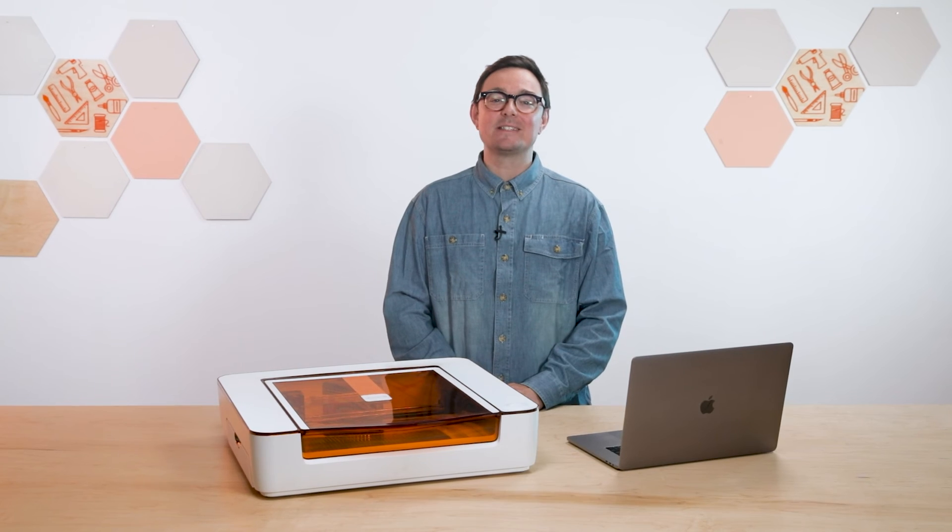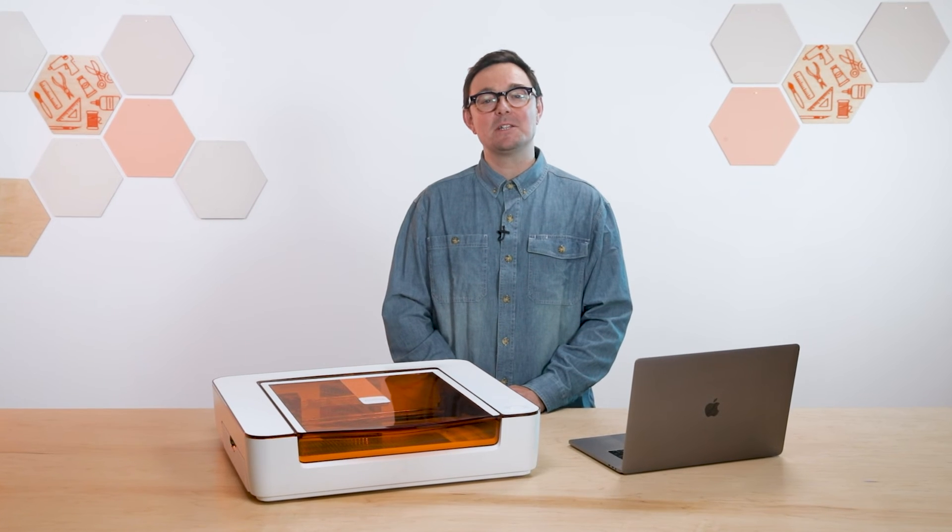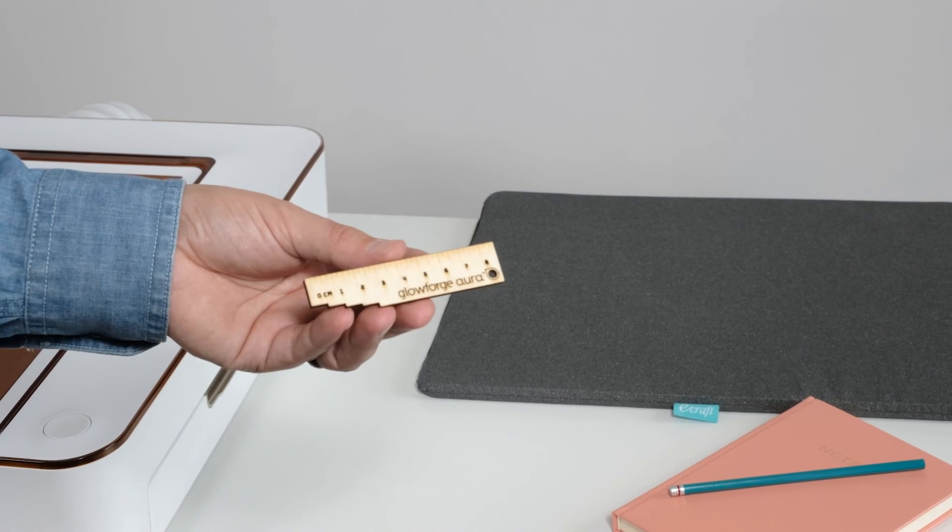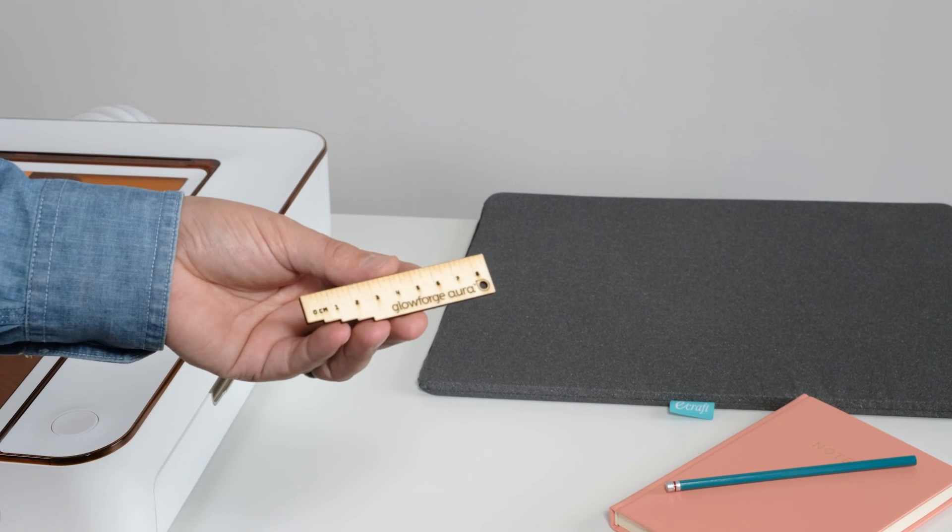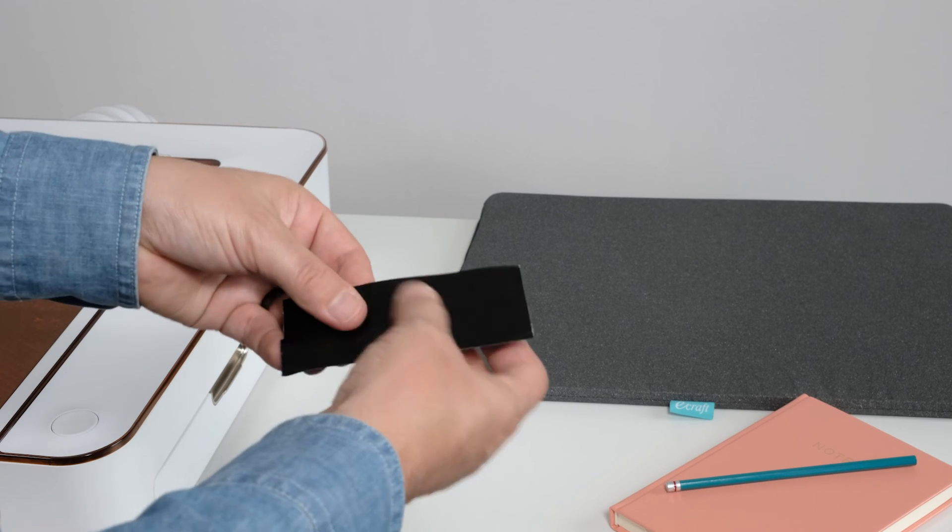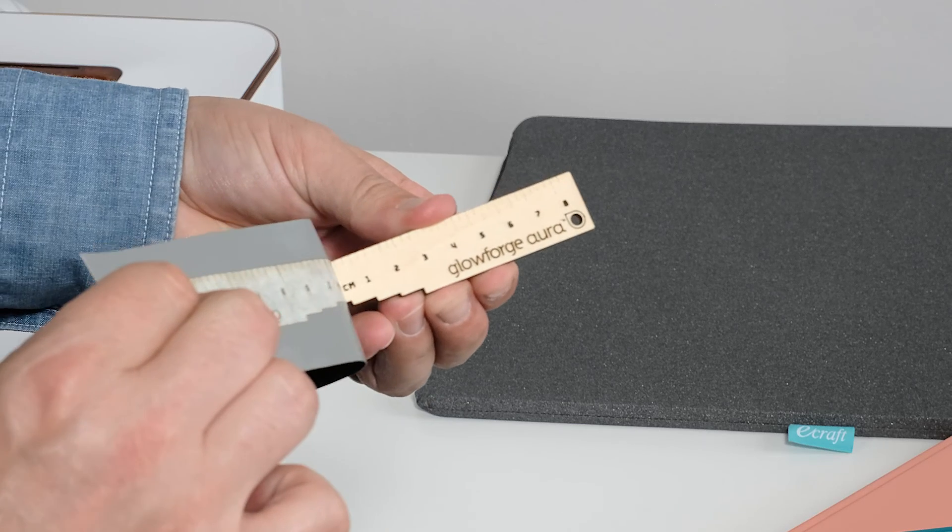Once the printing finishes wait a few moments for any leftover smoke to clear and when it's done the app will show an updated image with your now completed print. Open the lid and take out your new Aura ruler. Remove the masking from both sides. You can use your fingernails or the edge of a knife but a piece of tape can really speed this along.